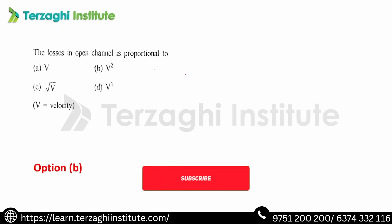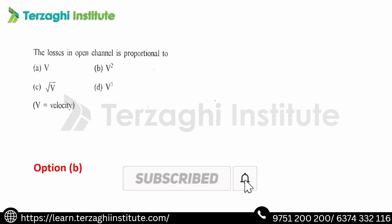The losses in open channel flow are proportional to V². Losses equal fLV²/2g, and in open channel flow, losses are proportional to V². Thank you, aspirants. Here are the fluid mechanics most important questions. Keep watching and keep learning. Thank you.